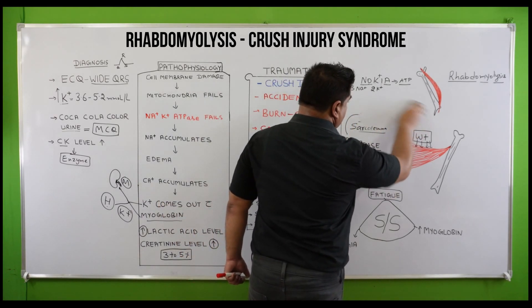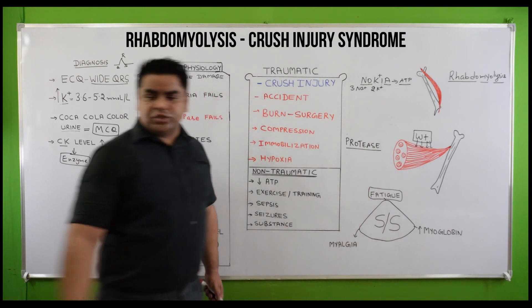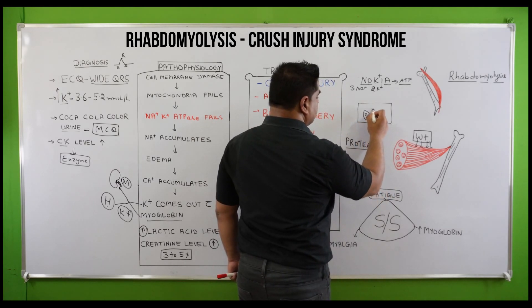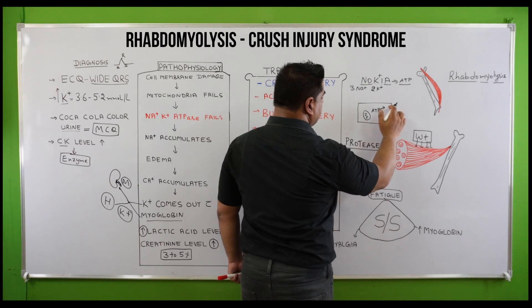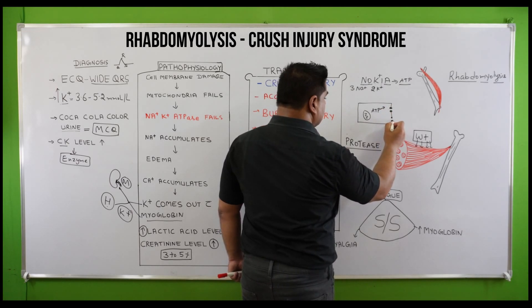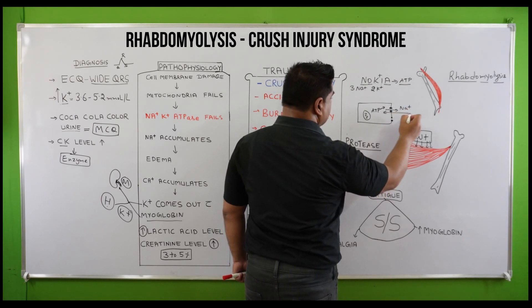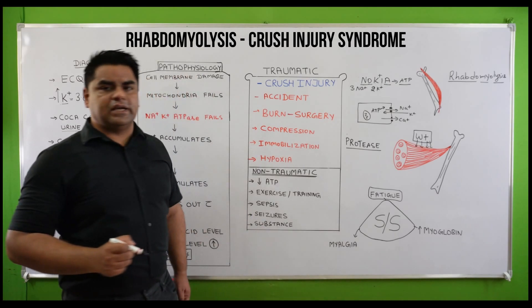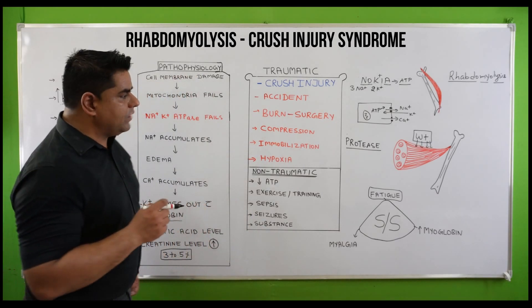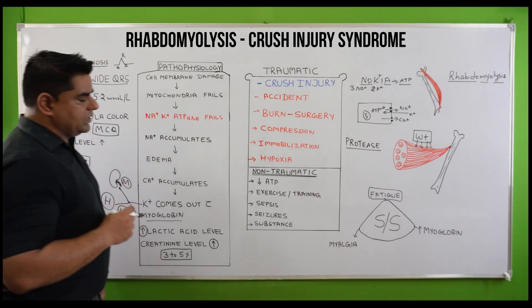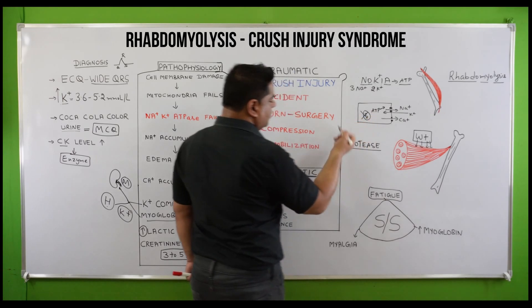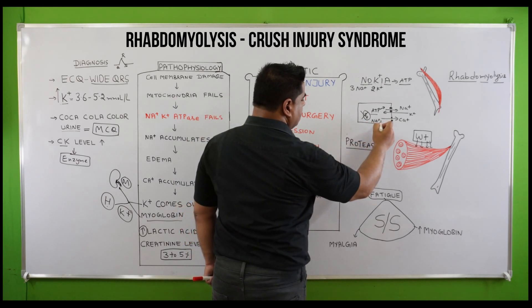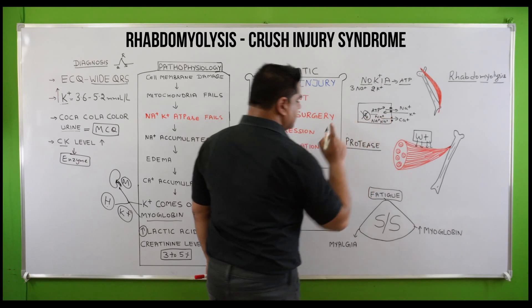The sodium-potassium ATPase pumps are present on all cells of the body. Mitochondria produce ATP, which is used by sodium-potassium ATPase pumps and calcium pumps to shift sodium out and take potassium inside. Calcium is also pumped out by these ATPases. Whenever there is injury to the mitochondria — by traumatic or non-traumatic causes — mitochondria fail, and these pumps don't work properly, causing accumulation of sodium inside the cells.